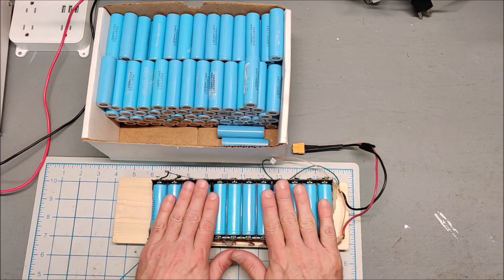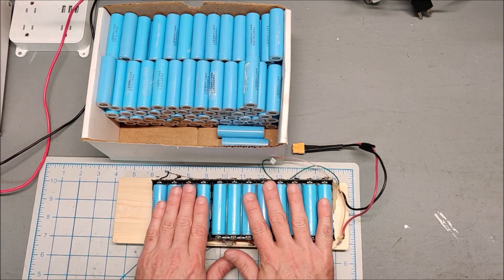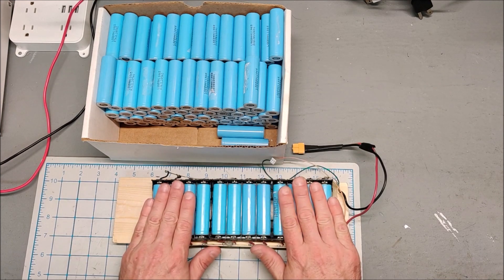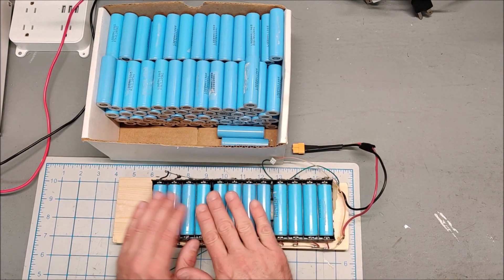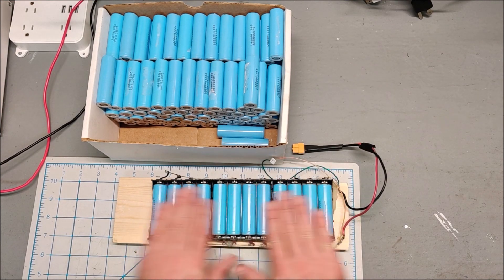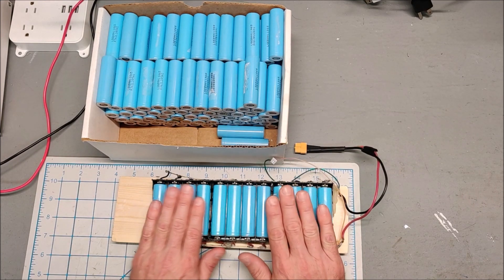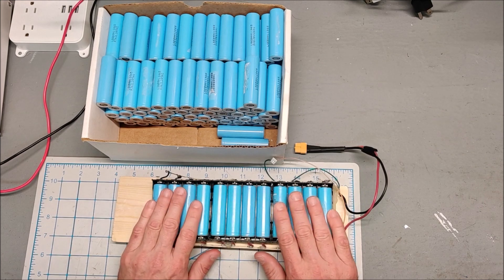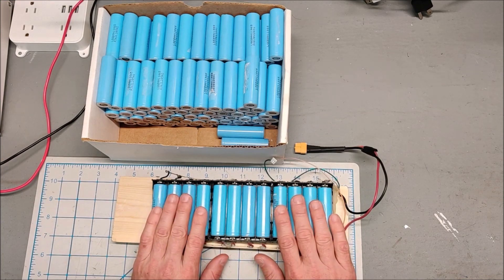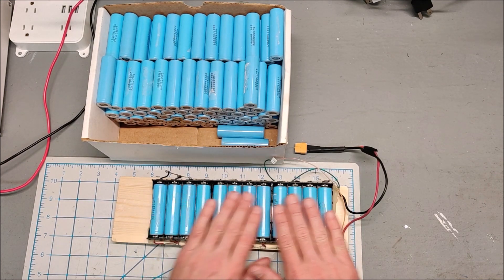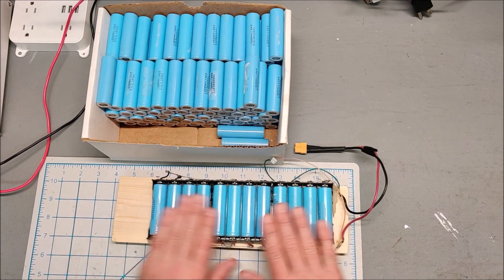When you are processing cells, one of the slowest things is waiting for all the cells to charge up. You need to charge all the cells, regardless of whether you're going to test them or not. When you're salvaging cells, they're probably pretty low voltage, and they need to be brought up to 4.2 volts.